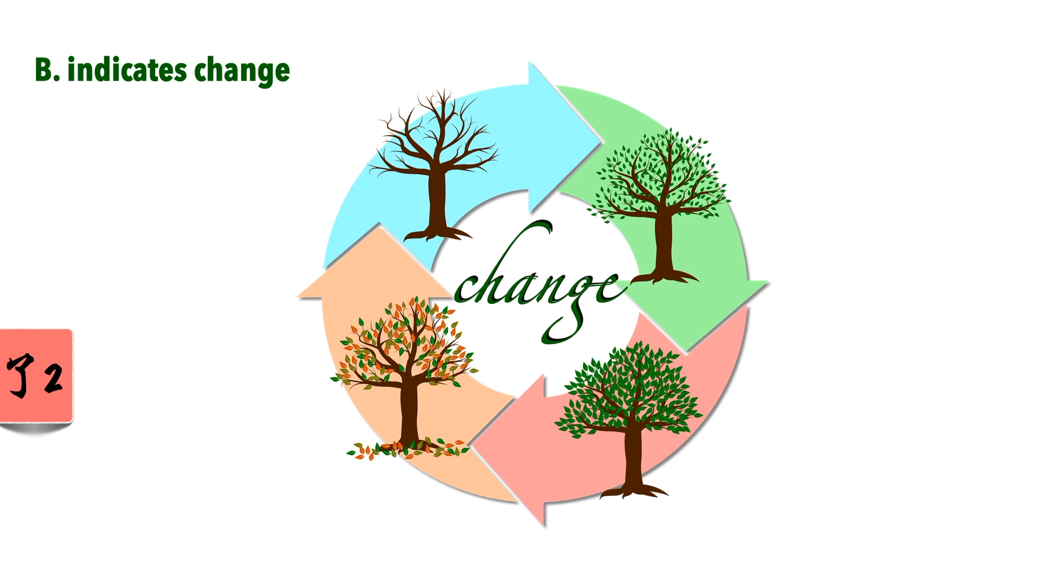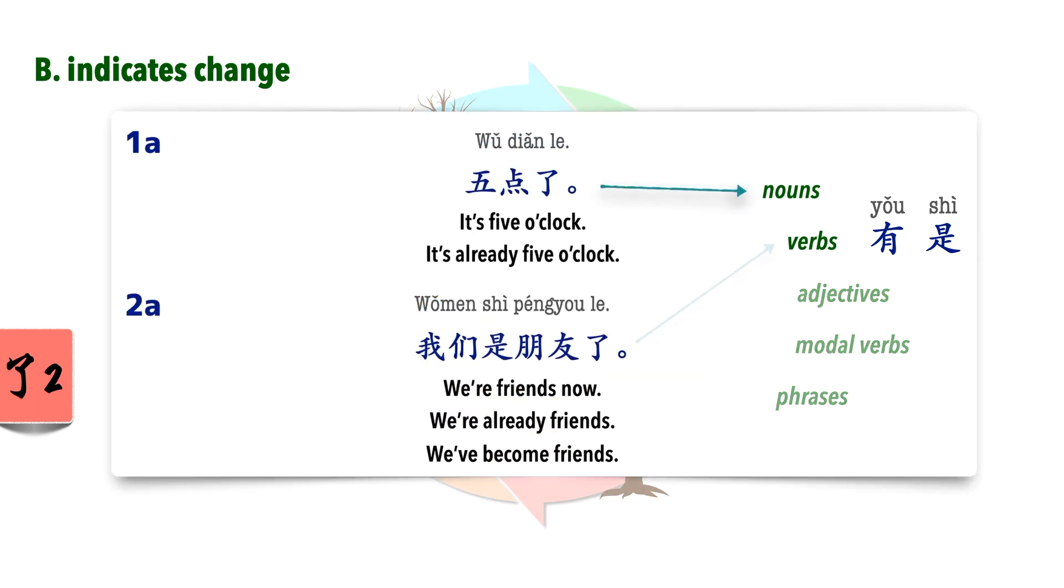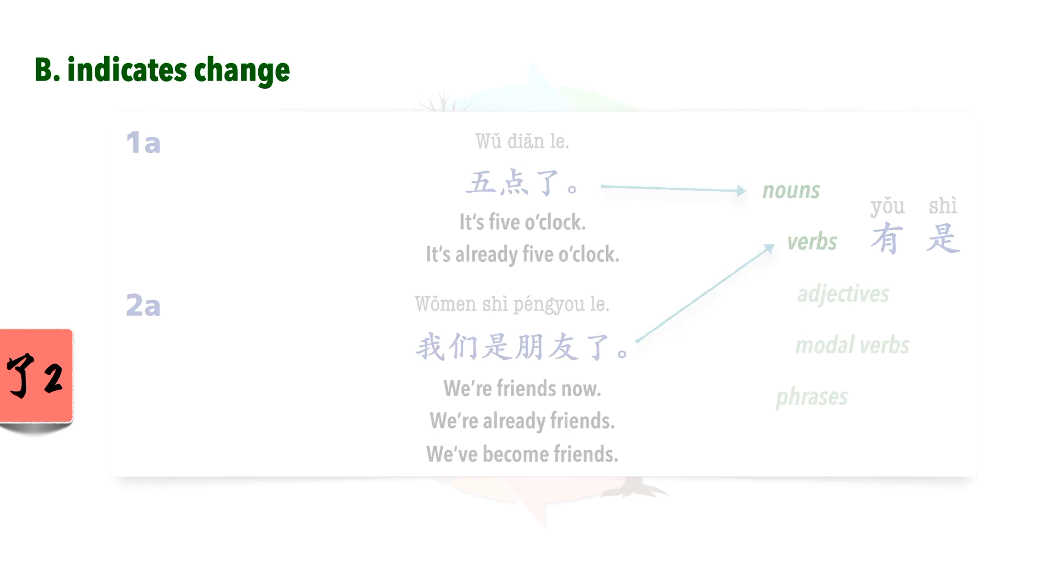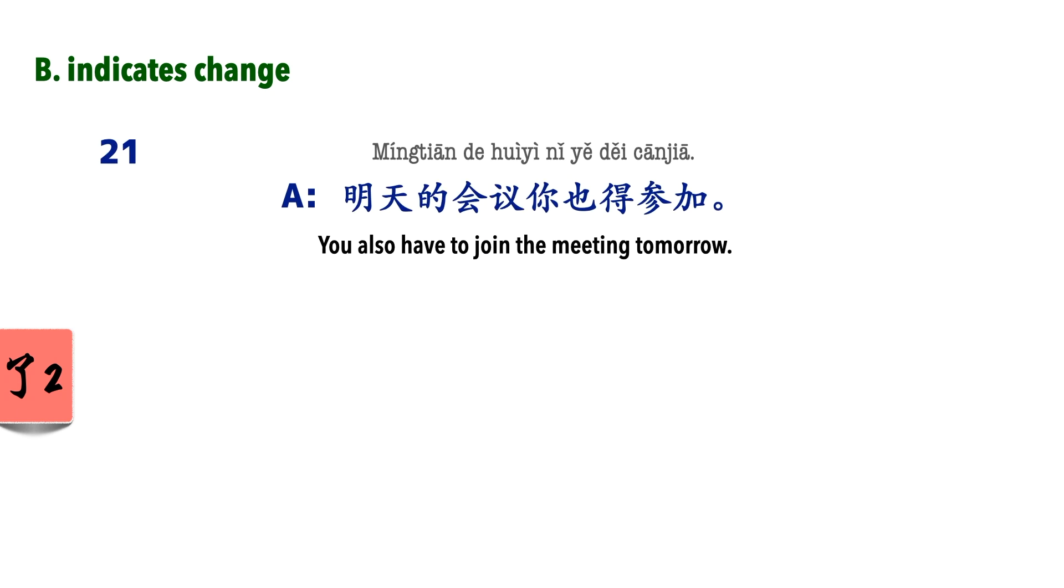This 了2, indicating change, is often placed after nouns, verbs, adjectives, modal verbs, and even phrases. Verbs 有 and 是 are often used with this. We've seen a noun example in 1A, and a 是 example in 2A. Let's now look at other cases. 我胖了. This literally means I fat already. I wasn't previously, but now I am. 明天的会议你也得参加. 好,知道了. I didn't know previously, now I know.